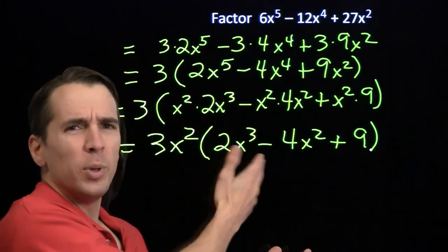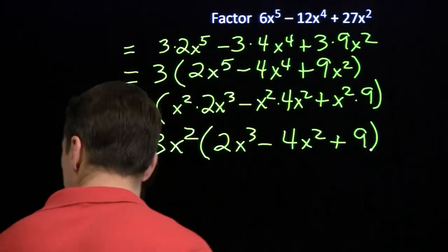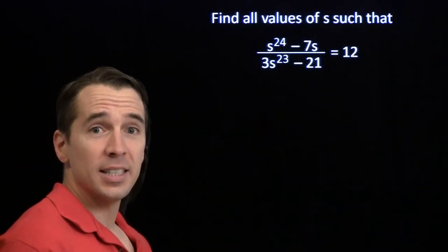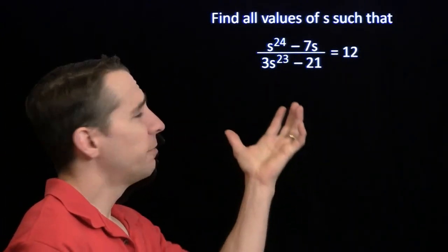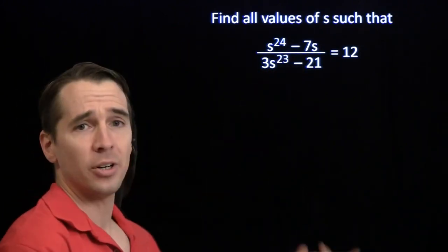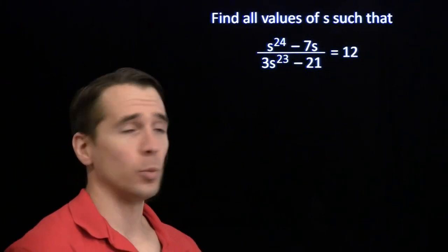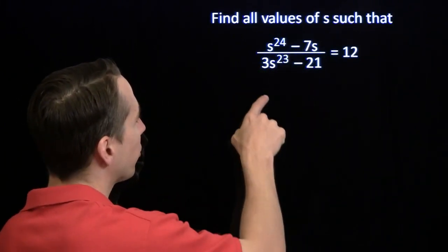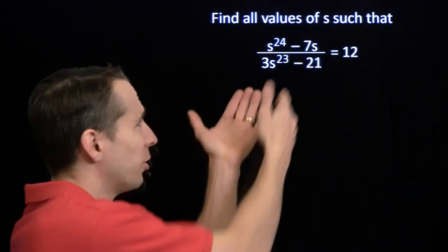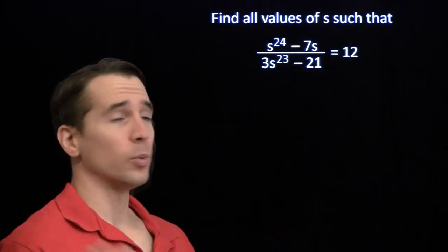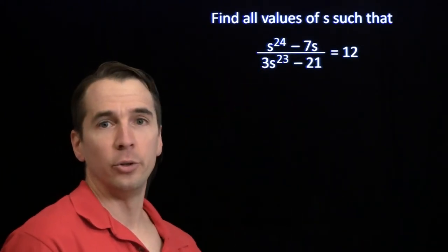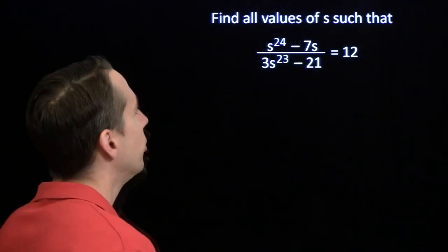You might be wondering, why would we ever want to factor stuff with variables? Yeah, I've got an answer for that too. Check this out. We've got an equation like this. Now you might want to try just figuring out stuff by guessing, you know, stick in values of s, see what works. You know, if you put in s equals 0, you get 0 over here. That doesn't work. You put in s equals 1, you'll get negative 6 on the top, you'll get negative 18 on the bottom. That'll give you a third. A third isn't 12, s equals 1 doesn't work. You stick in s equals 2 and you'll be here all day multiplying out 2 to the 24th. We've got to find something smarter to do here.